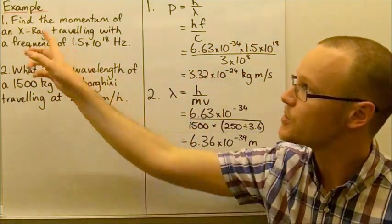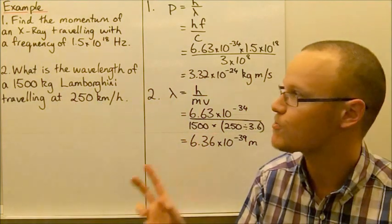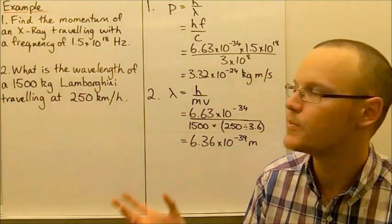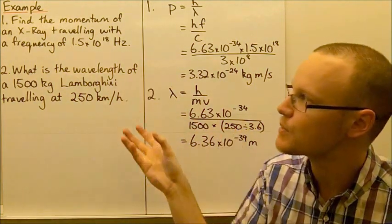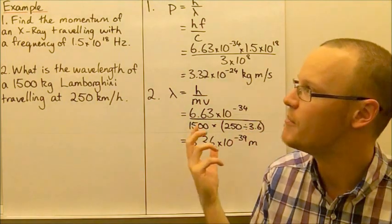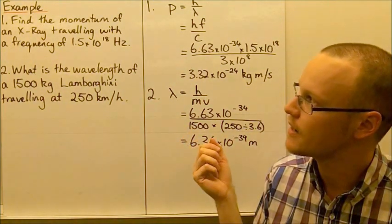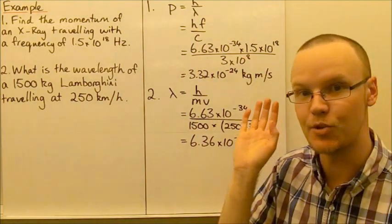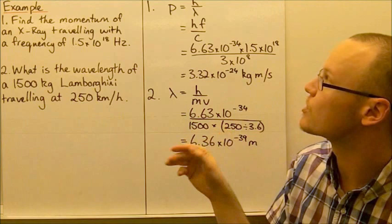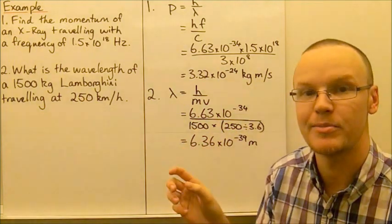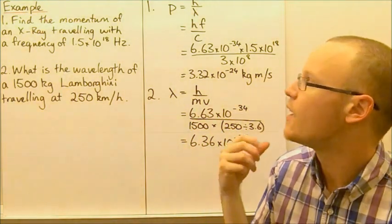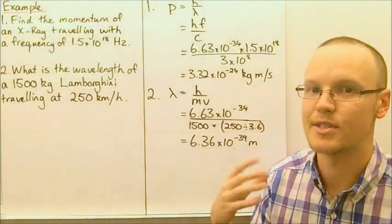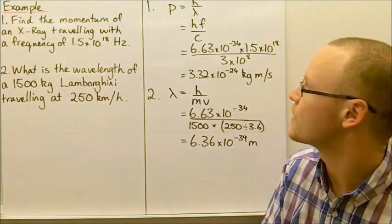Just a couple of quick examples. Find the momentum of an X-ray traveling with this frequency, a frequency that's this high. The higher the frequency, the higher the energy, the higher the momentum a particle is going to have. Momentum and frequency are directly proportional, so a lower wavelength is going to mean less momentum. Waves such as radio waves are going to have less momentum because they have such a large wavelength and very low frequency.